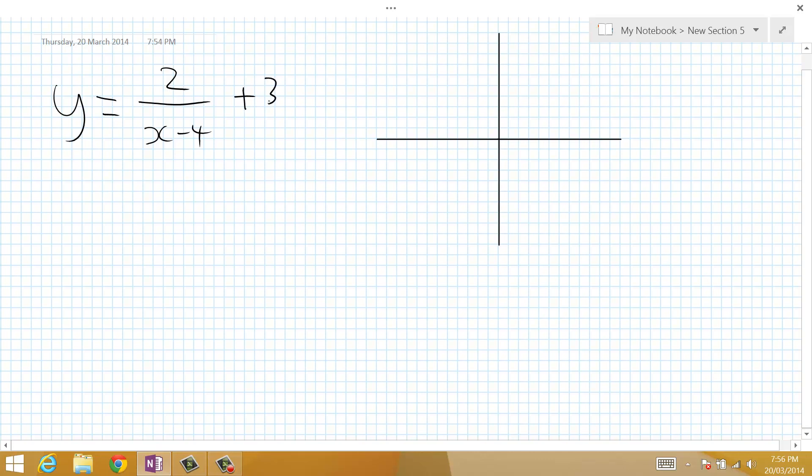The first thing that we need to do is work out our asymptotes. The equation of a hyperbola tells us our asymptotes straight off. We know that the bottom part of the fraction can never equal 0, because we can't divide by 0, so therefore we know that x can never equal 4, because x minus 4 equaling 0 would mean that x has to equal 4.